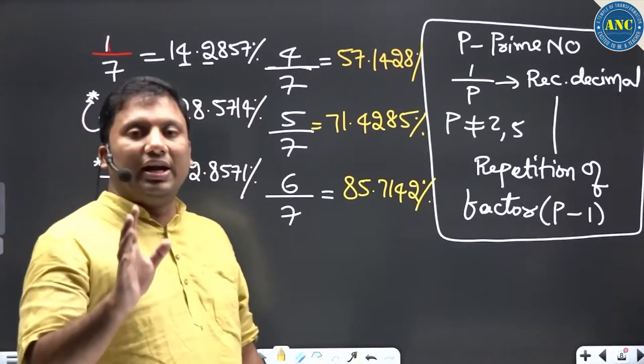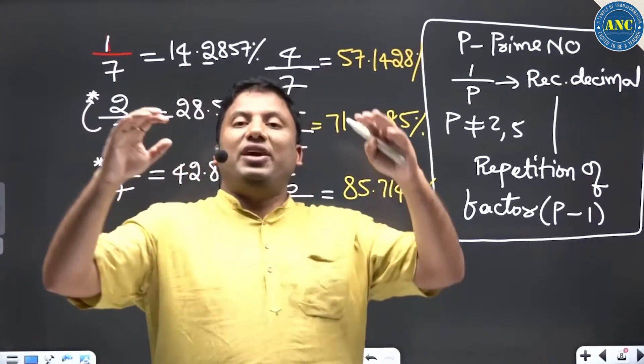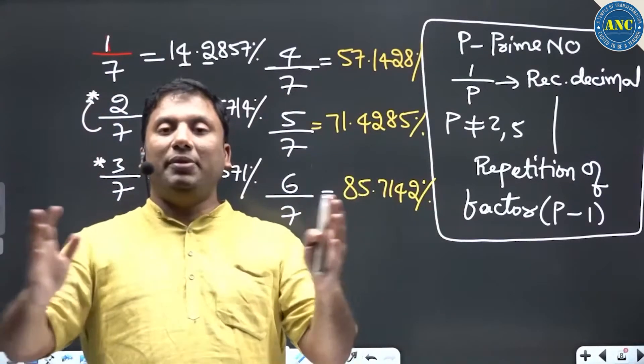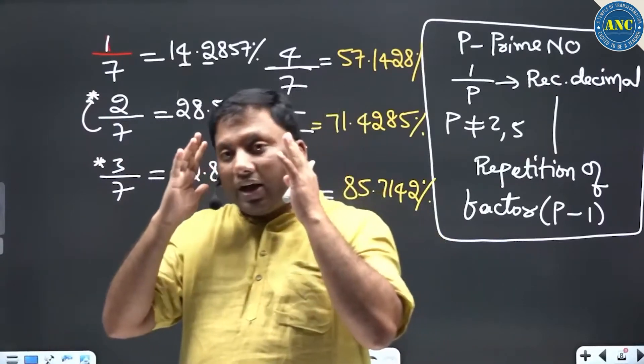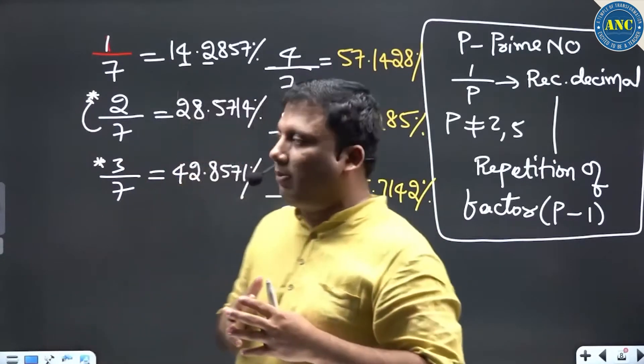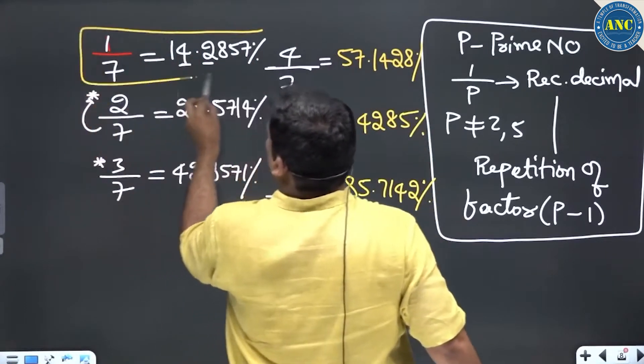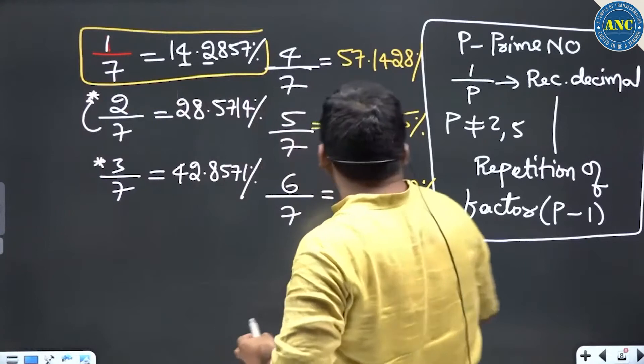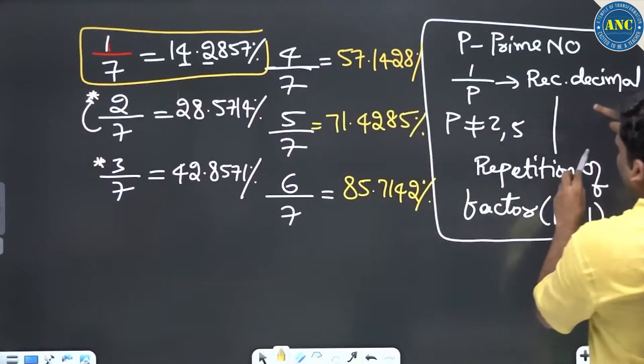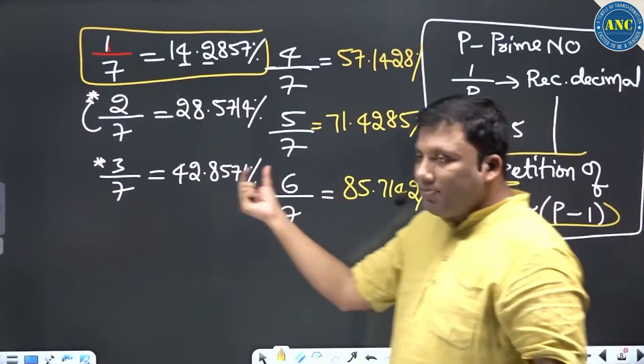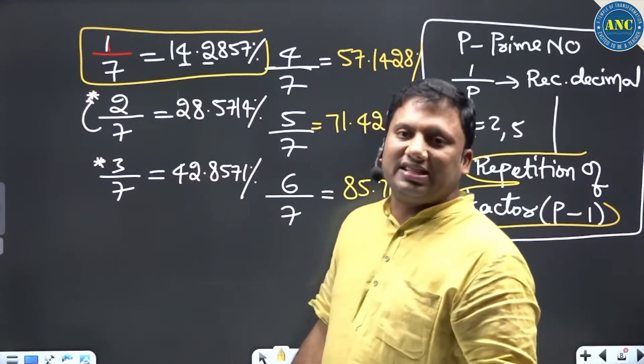I hope the idea is clear. Through every question we will discuss the ideas, concepts, shortcuts, how to eliminate answer options, how to actually solve aptitude problems. 1/7 is 14.2857. If p is 7, it repeats with 7 minus 1, which is 6 - the same 6 digits getting repeated.